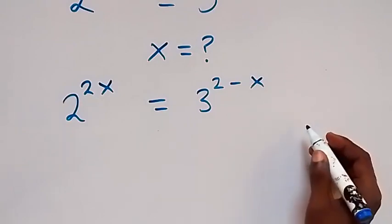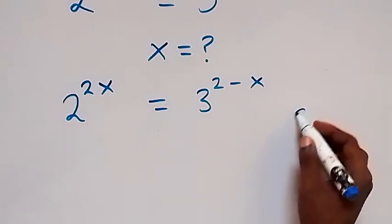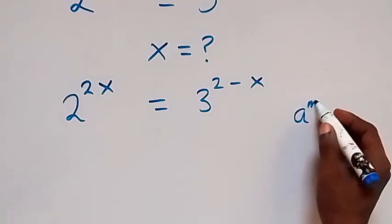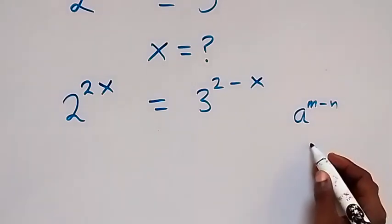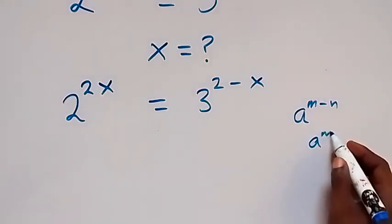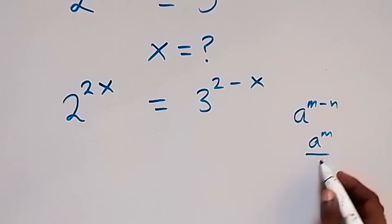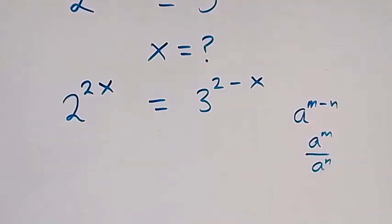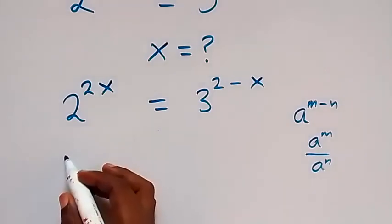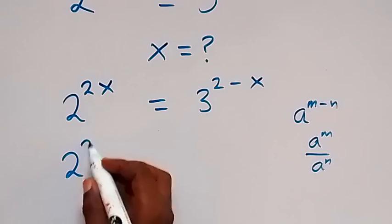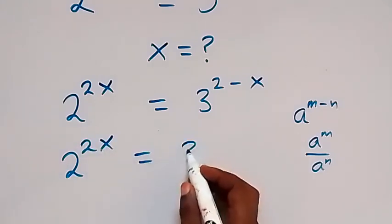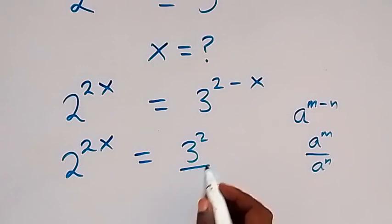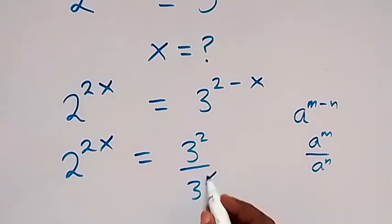From the law of indices, when we have a raised to power m minus n, this is the same as a raised to power m divided by a raised to power n. So when we write this side like that, we have 2 raised to power 2x equals 3 raised to power 2 over 3 raised to power x.